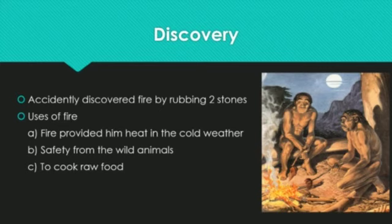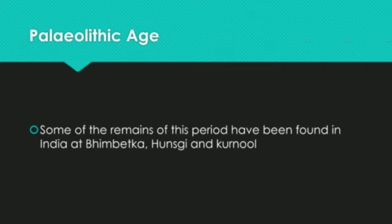Fire also provided safety from wild animals — early man burned fire in front of cave mouths to protect himself. Also, accidentally, he started cooking raw food in fire. Some remains of this period have been found in India at Bheembetka, Hunsgi, and Kurnun. This is the information we have regarding the early man of the Paleolithic Age.